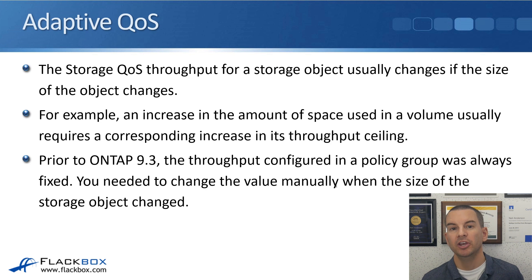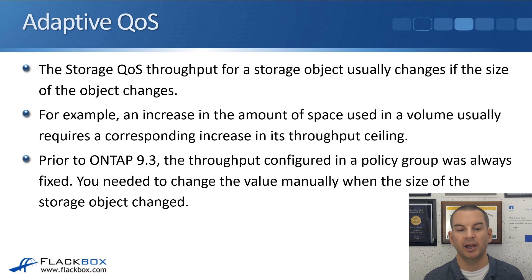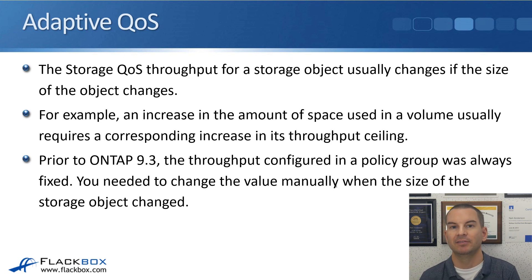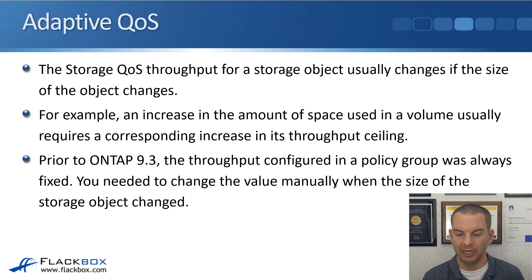Storage QoS throughput for a storage object usually changes if the size of the object changes. For example, an increase in the amount of space used in a volume usually requires a corresponding increase in its throughput ceiling — as the volume gets bigger, you're usually going to want to give it more throughput. Prior to ONTAP 9.3, the throughput configured in a policy group was always fixed. If the size of the volume increased and you wanted to give it more throughput, you would have to change the setting on the policy group manually, which created significant administrative overhead.